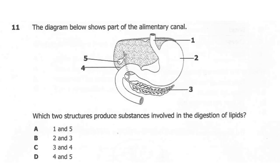Question 11. The diagram below shows part of the alimentary canal. Which two structures produce substances involved in digestion of lipids? A: 1 and 5. B: 2 and 3. C: 3 and 4. D: 4 and 5. What's the correct answer here? Is it A, B, C, or D?